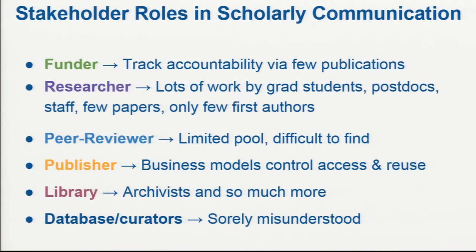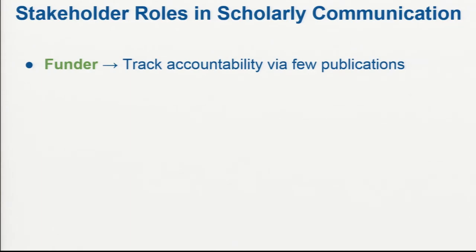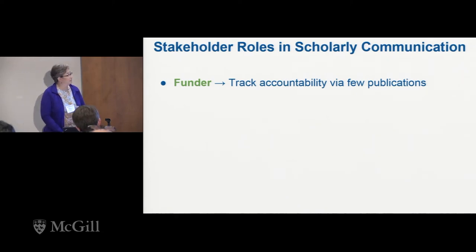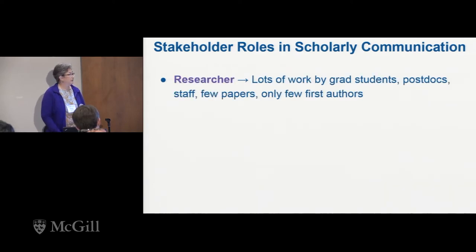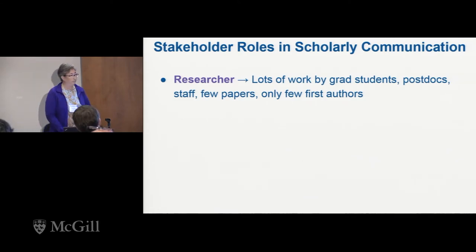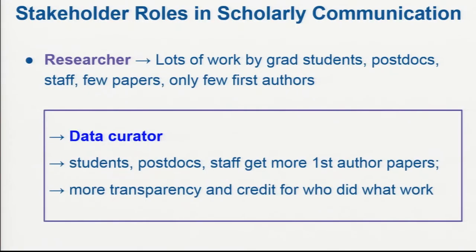How has this changed what people do? Funders tracking accountability of their money — now authors and researchers have a way of releasing more of that data to the public, which can be part of that accountability. For researchers, they do lots of work; they get maybe one or two papers out of a project. Well, now they will be acting as data curators, and their students, postdocs, and staff have an opportunity to be a first author. Normally you have one paper with a ton of authors — this can actually divide that out, so people get more credit for what they actually do.